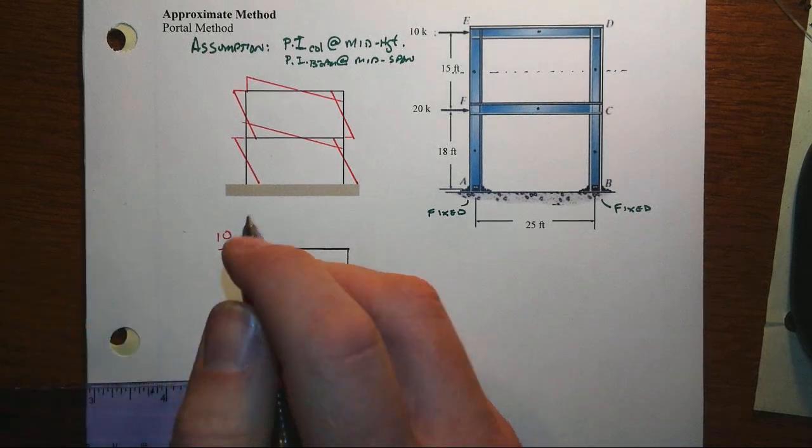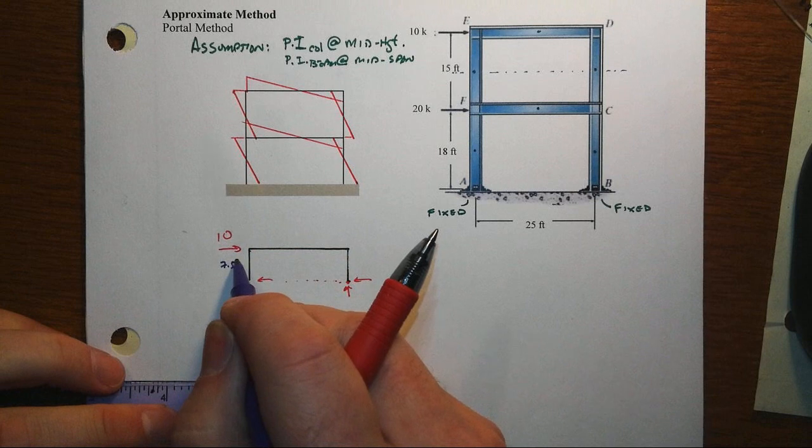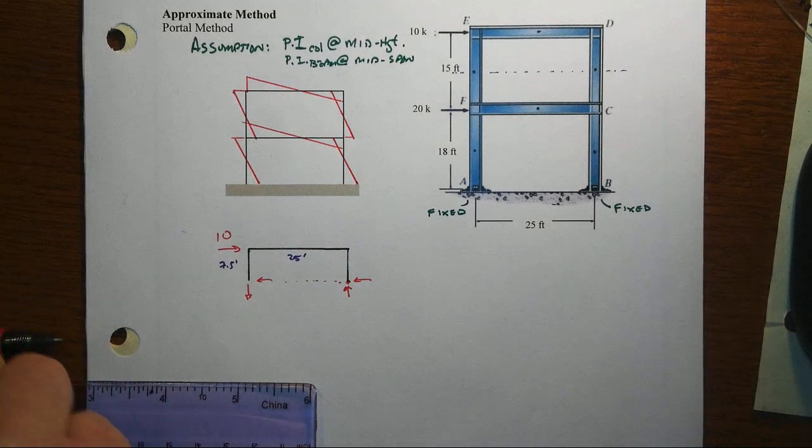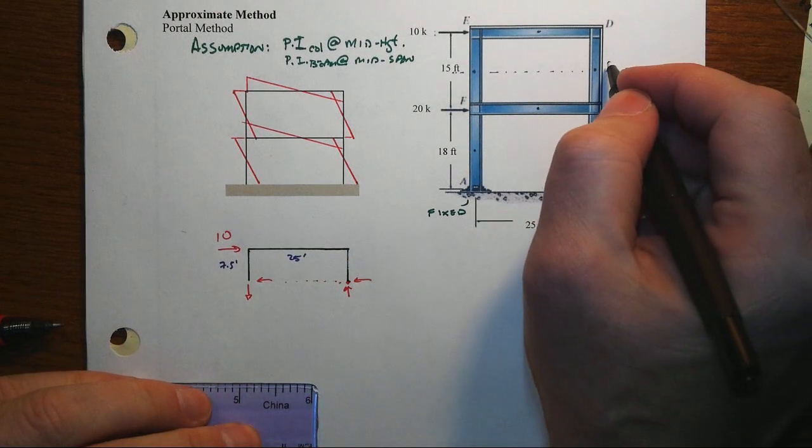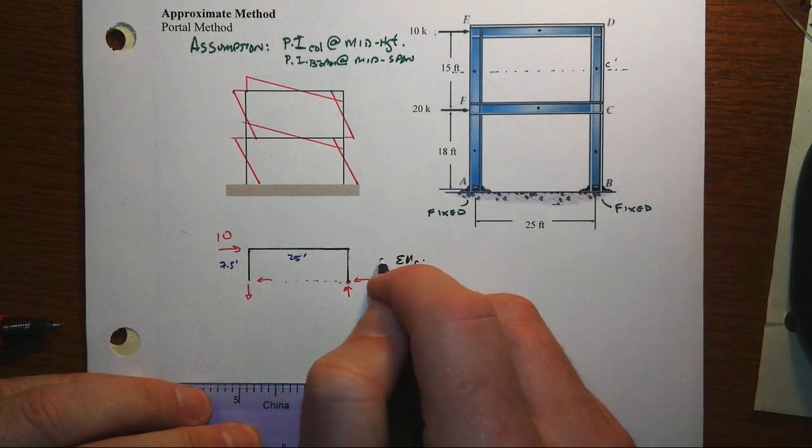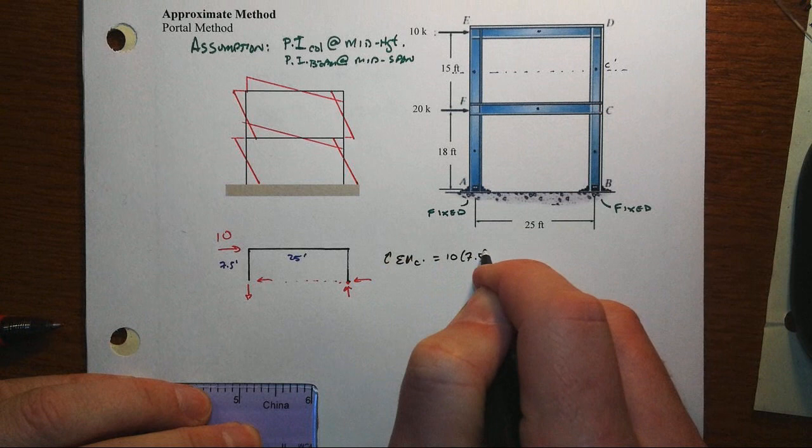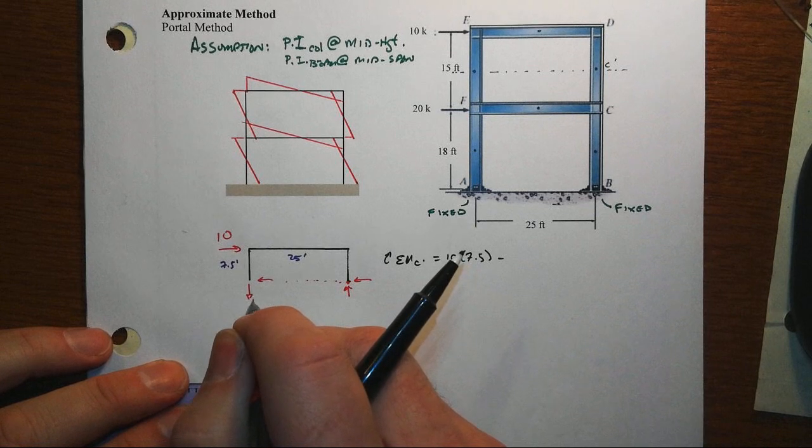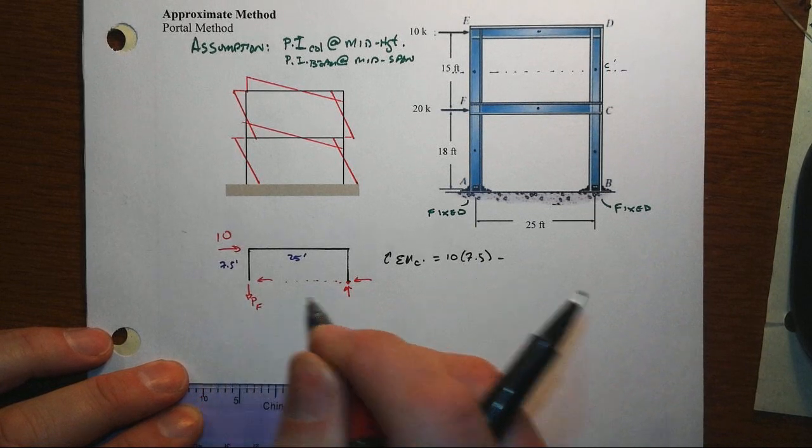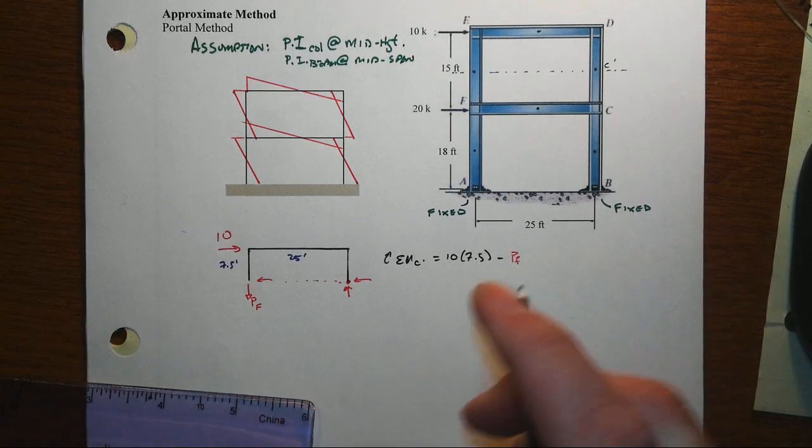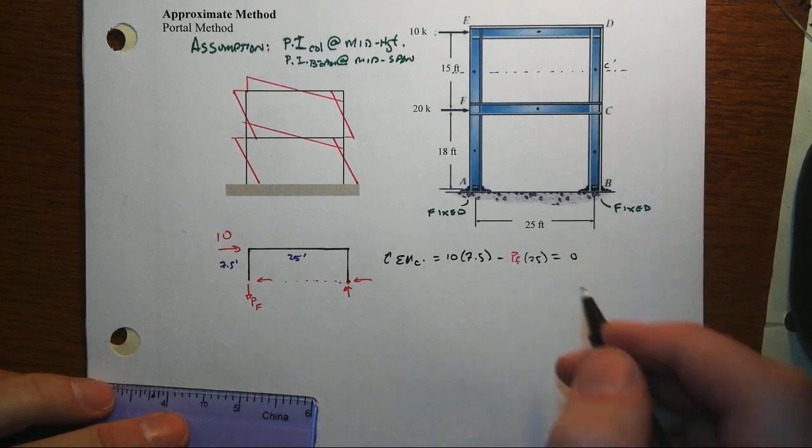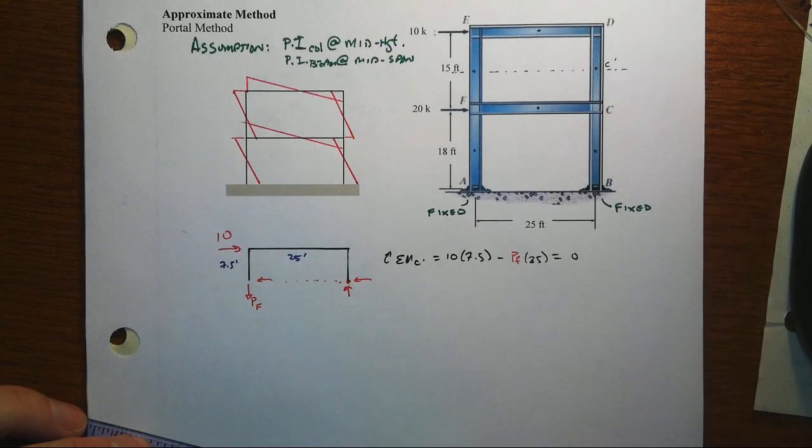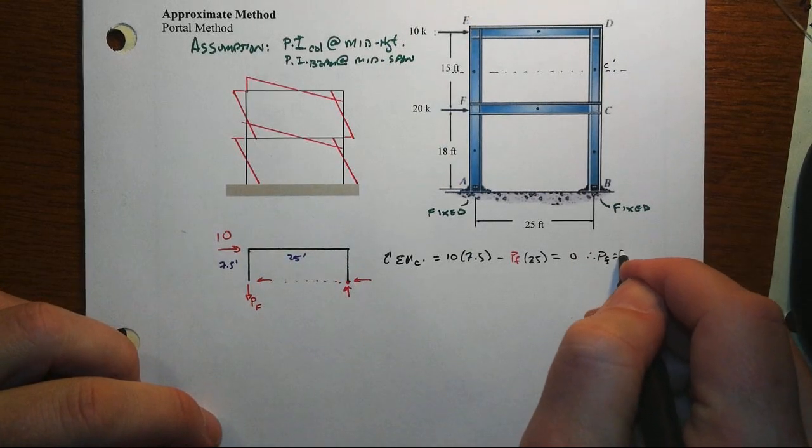Because now we can sum moments about one end and we'll get what the column axial force is going to be. We have a height here of 7.5 feet. We've got a bay width that is 25 feet. So if we sum moments about, let's call that C prime, then we get 10 times 7.5 minus our axial force that's in our column. Let's call it PF times our 25 feet equals zero. And then that will be 75 divided by 25. And so therefore, our axial force equals 3 kips.